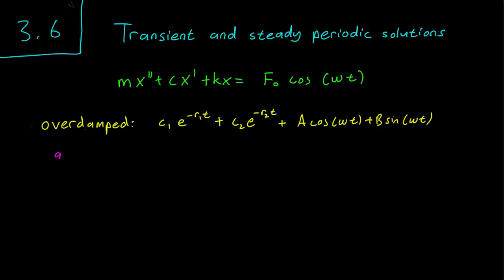that as t goes to infinity, the C1·e^(−R1·t) term becomes 0 and the C2·e^(−R2·t) term becomes 0, and we are left with just the cosine and sine part.